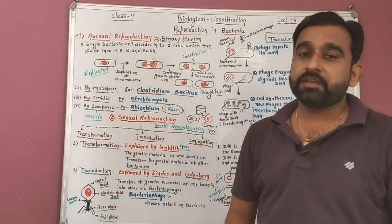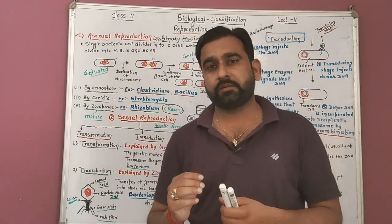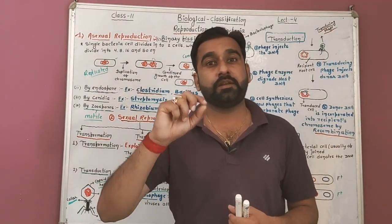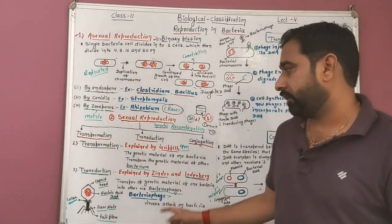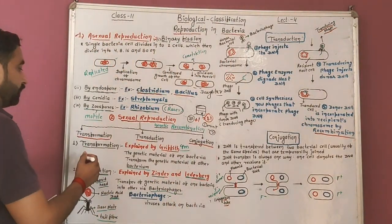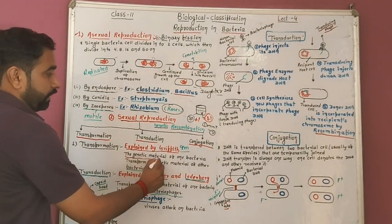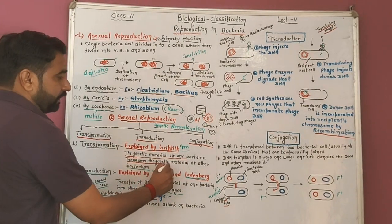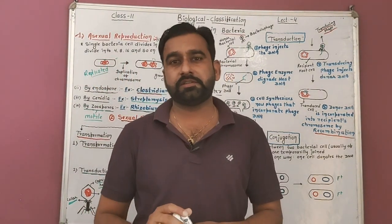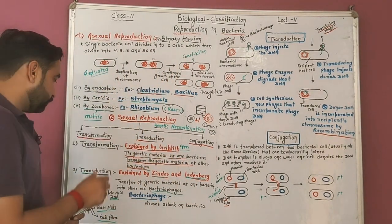Transformation: when the discovery of DNA as the genetic material was being investigated, a scientist named Griffith performed an experiment. Griffith explained the concept of transformation — that DNA is the genetic material. This experiment was named the transformation experiment. Transformation is explained by Griffith. The genetic material of one bacterium transforms the genetic material of another bacterium — this is called transformation.